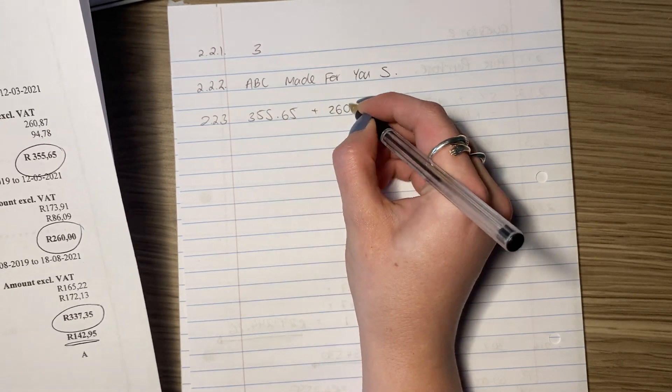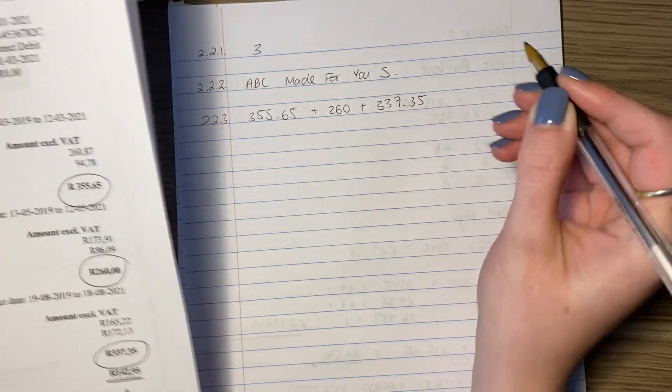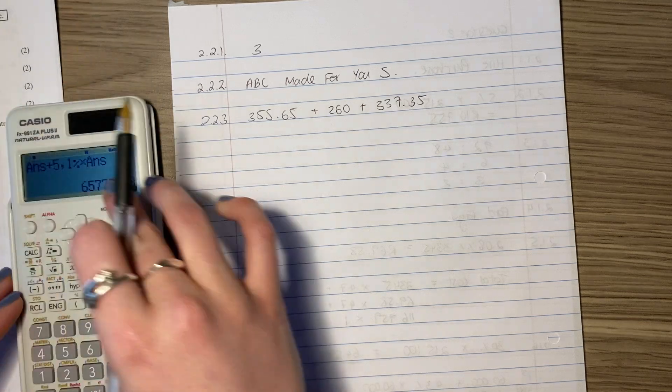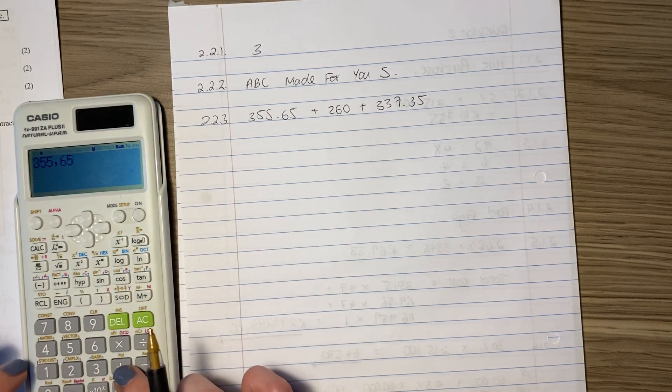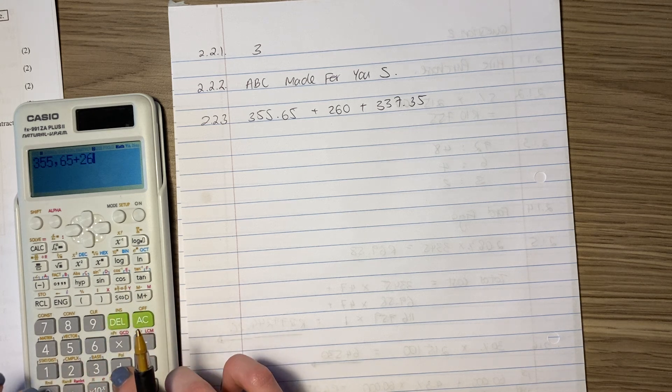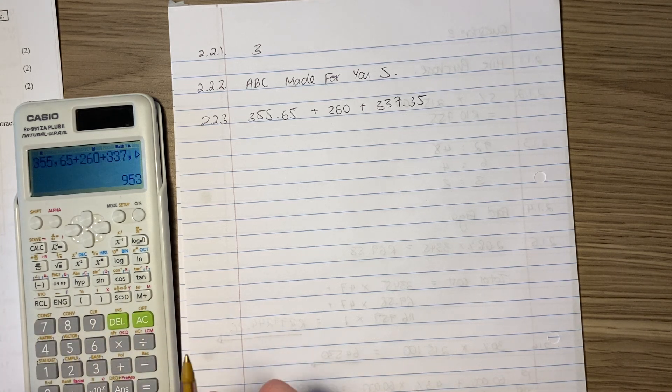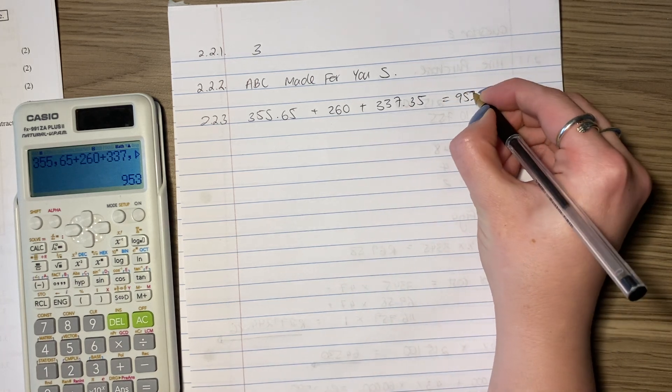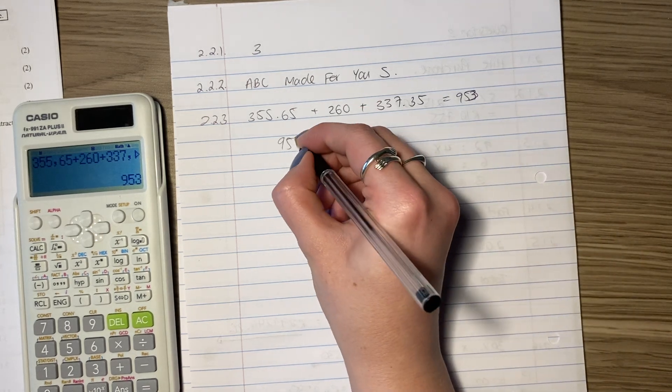Make sure you put it in your calculator carefully. 355.65 plus 260 plus 337.35, and that gives us 953. Oh wow, my handwriting today. 953. Then we need to work out VAT.